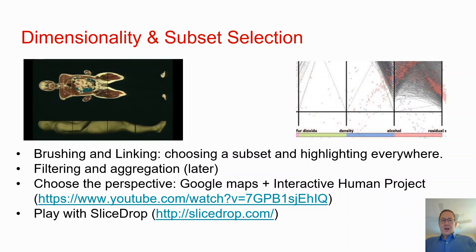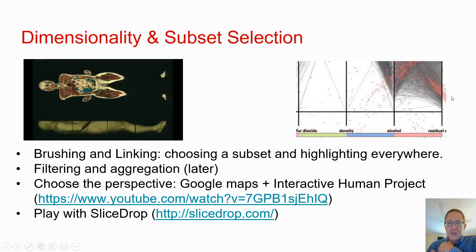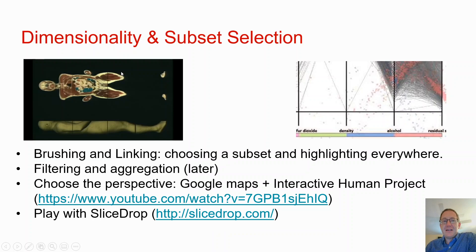There's also brushing and linking — I can choose a subset of the data in one visualization and it shows up highlighted in another, so you see the connection between data sets. When we look at filtering and aggregation, when I remove from one I remove from the other. Have a look at SliceDrop and just play around with it — it allows you to look at a brain scan of a 14-year-old healthy adolescent, and you can play around with what the brain anatomy looks like, do slices, explode it, and see different perspectives.